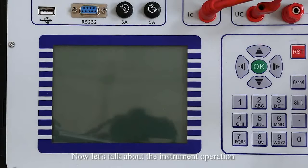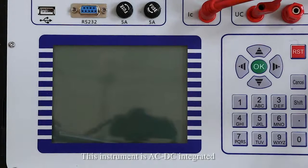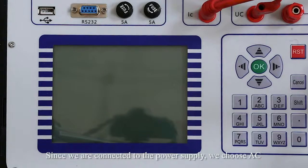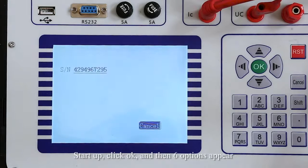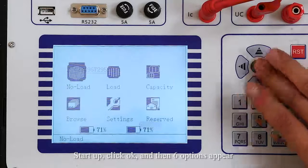Now let's discuss the instrument operation. This instrument is AC-DC integrated. Since we are connected to the power supply, we choose AC. Start up, click OK, and then these options appear.